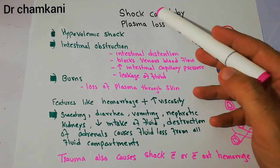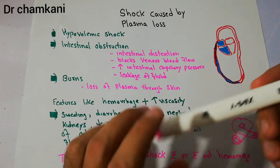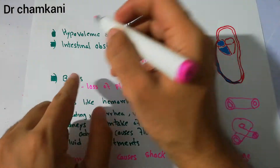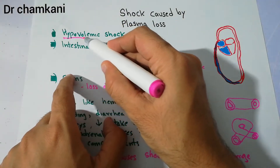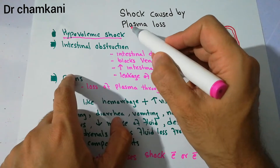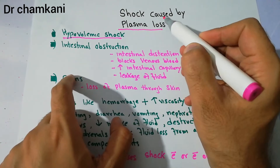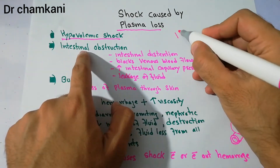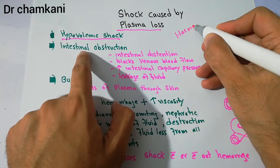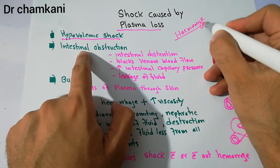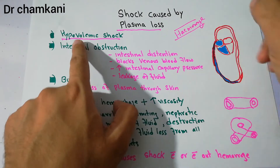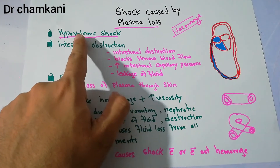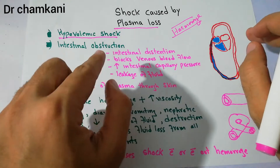Today we will be talking about shock caused by plasma loss. Shock caused by plasma loss is also a hypovolemic shock. So far we have been discussing hypovolemic shock caused by hemorrhage, but there are other causes of hypovolemic shock as well.